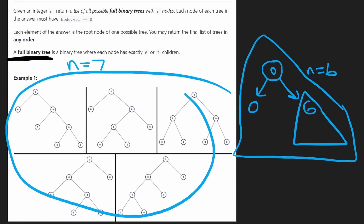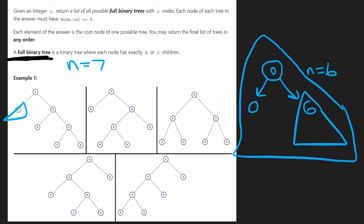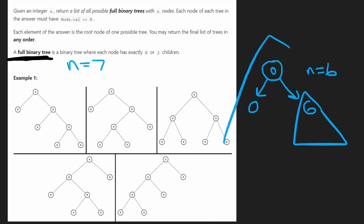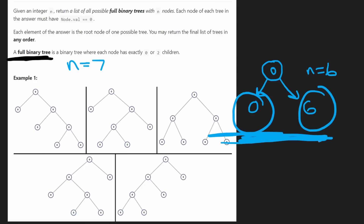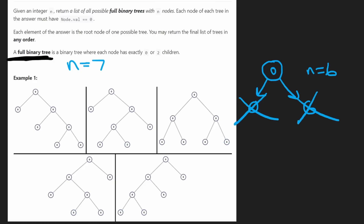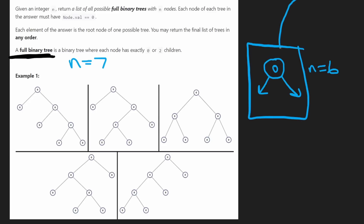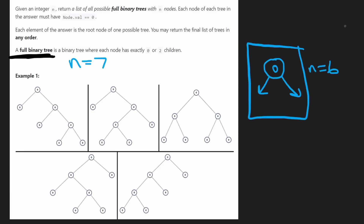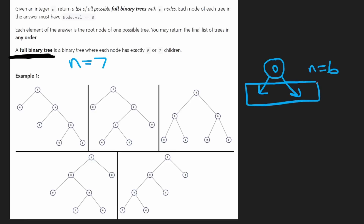Do any of these trees have an empty left subtree? No, they do not. The reason is that by definition it won't be a full binary tree, because every node has to either have two children — a left and right child — or has to have no left and no right child. So if we have zero nodes on the left and even a single node on the right, it becomes invalid. By noticing a pattern like this, we're trying to be smart, but I don't really know a way we can avoid brute forcing this problem.